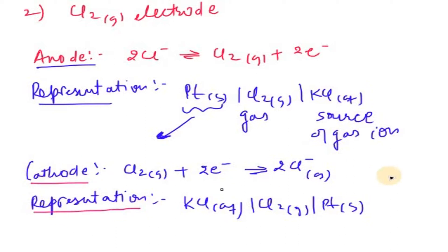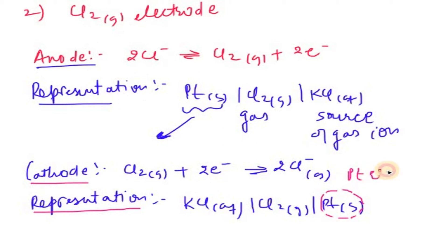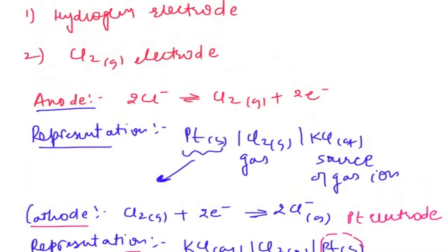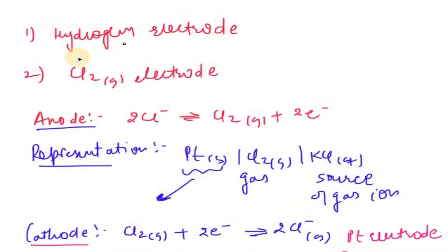The main thing to note is that a platinum electrode is required — that is the special case we see compared to other electrodes. That is how we define both the hydrogen electrode and the chlorine electrode.